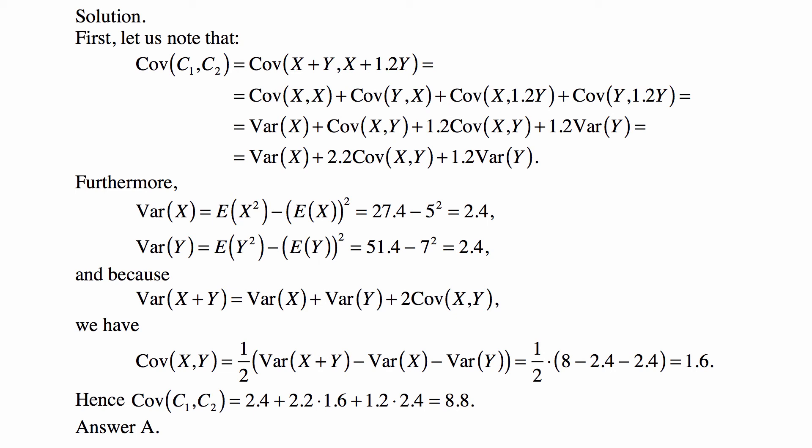So this whole thing becomes Var(X) + 2.2 Cov(X, Y) + 1.2 Var(Y). But the variance of X is E(X²) minus the mean of X squared, so it's 27.4 minus 5 squared, so it's 2.4. And the variance of Y is E(Y²) minus the mean of Y squared, so it's 51.4 minus 7 squared, so 2.4 again.